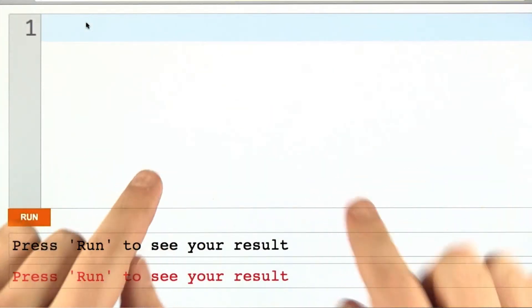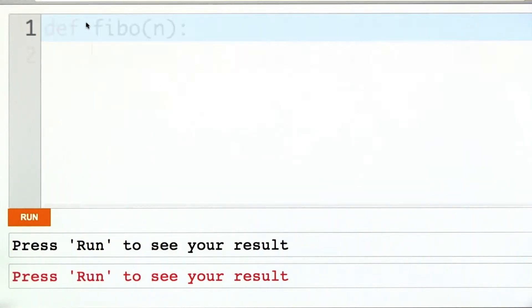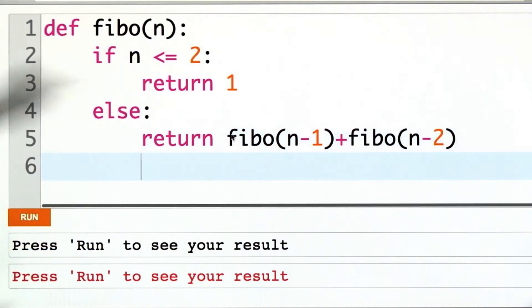I'll just write out the definition of Fibonacci right here. I'm declaring a procedure called Fibo. It takes an argument n. Here's our base case. If n is less than or equal to 2, return 1. Otherwise, we call ourselves recursively 2 times.